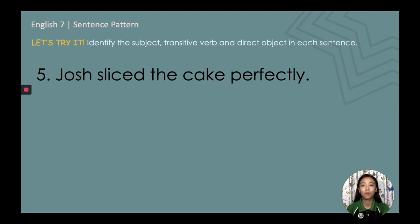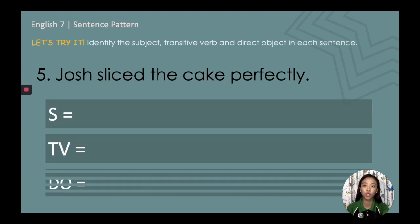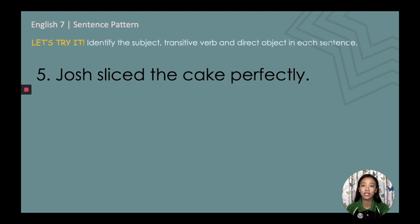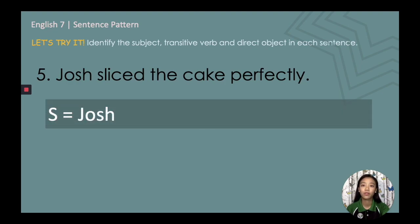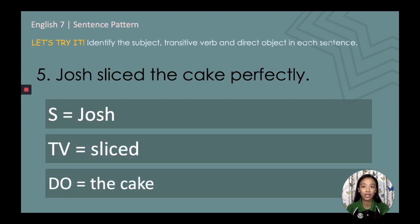Number five: 'Josh sliced the cake perfectly.' Pause this video as you try to identify the subject, transitive verb, and direct object. The subject is Josh. The transitive verb is 'sliced.' And the direct object is 'the cake.' Note that 'perfectly' is just an adverb.